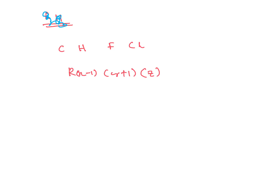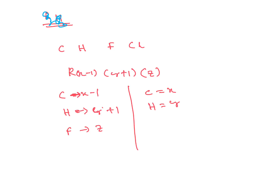These refrigerants are composed of carbon, hydrogen, fluorine, and chlorine. We represent a refrigerant as R(X-1)(Y+1)(Z), where carbon represents X-1, hydrogen represents Y+1, and fluorine represents Z. The number of carbon atoms equals X, hydrogen equals Y, fluorine equals Z, and chlorine is calculated as 2X plus 2 minus Y plus Z.